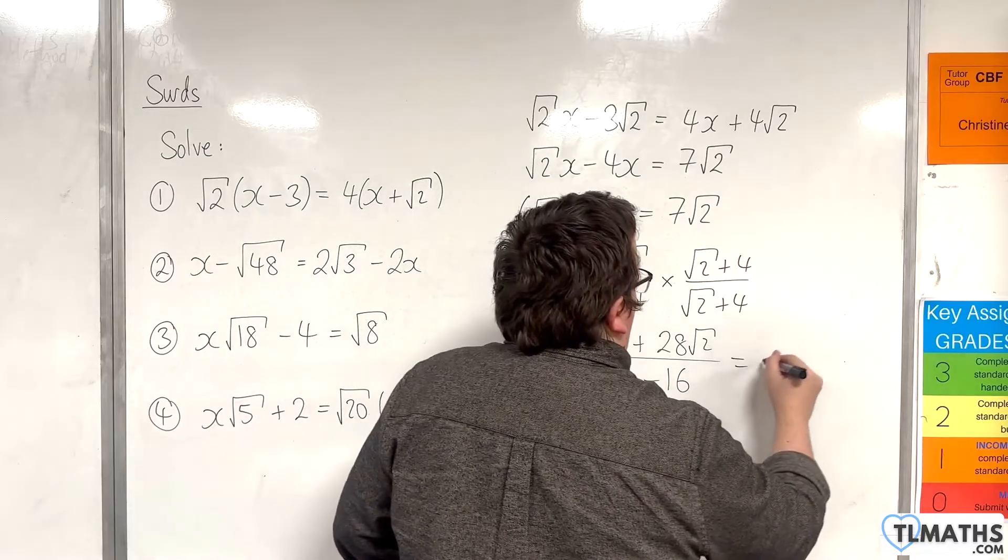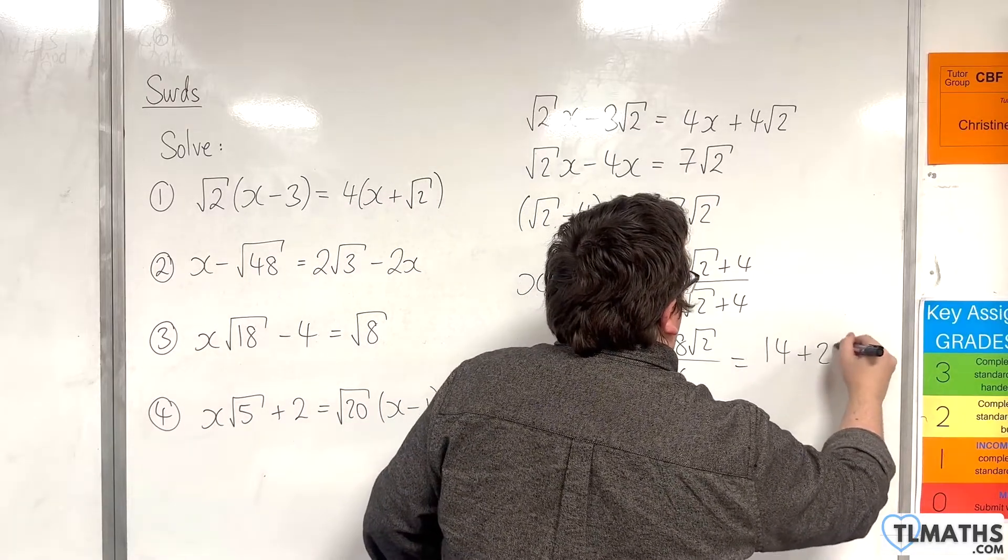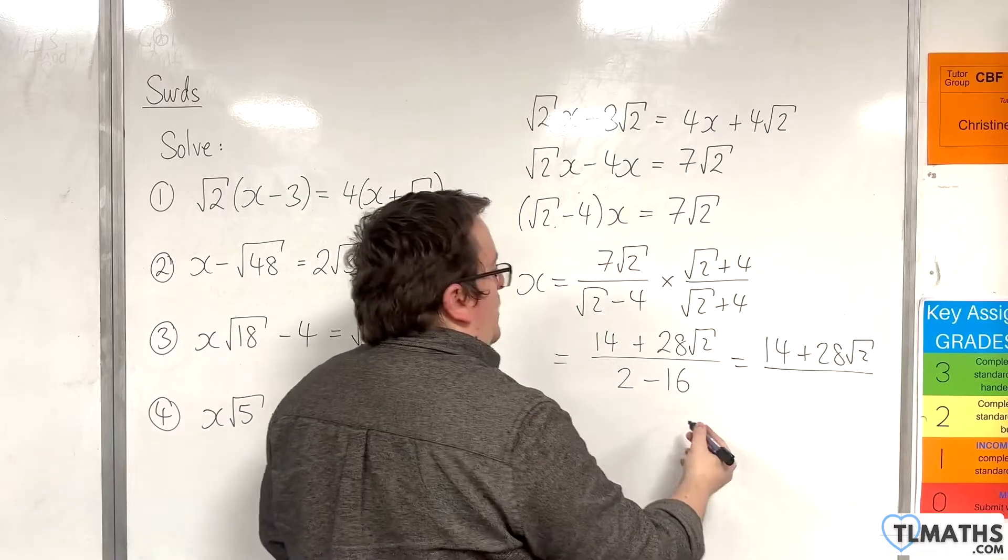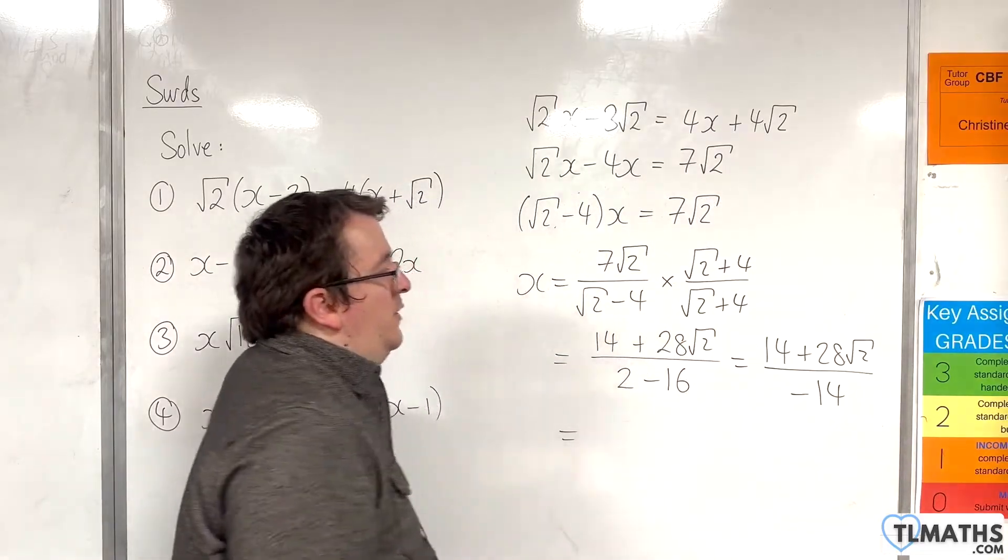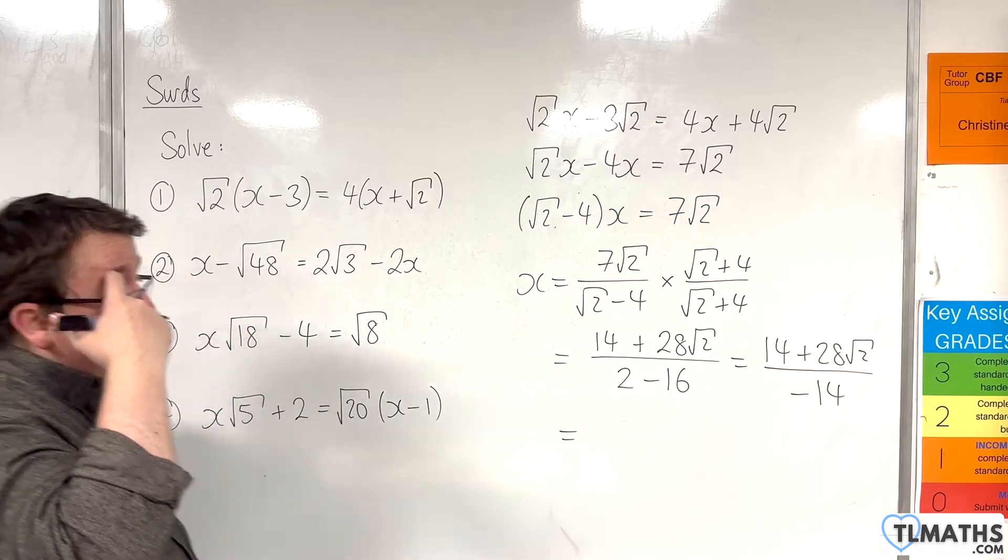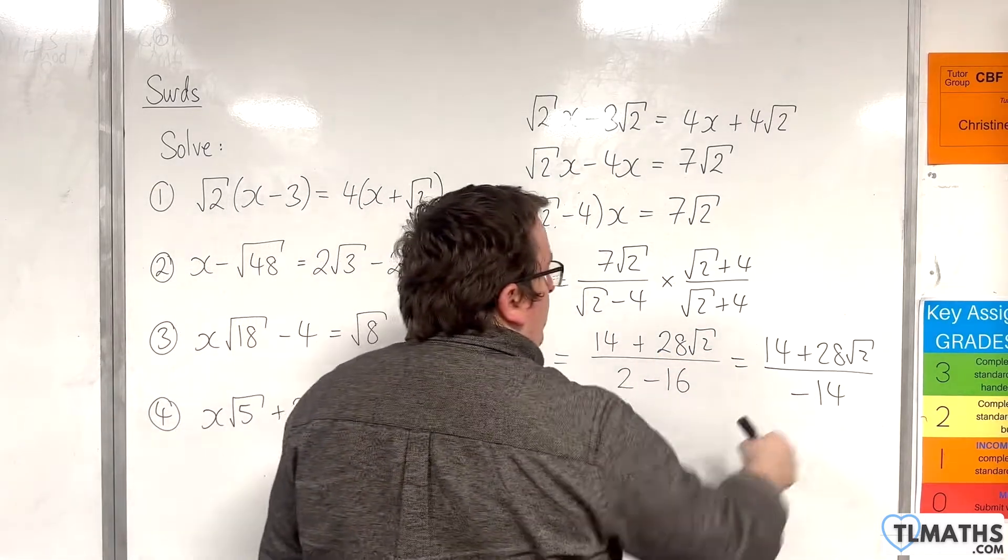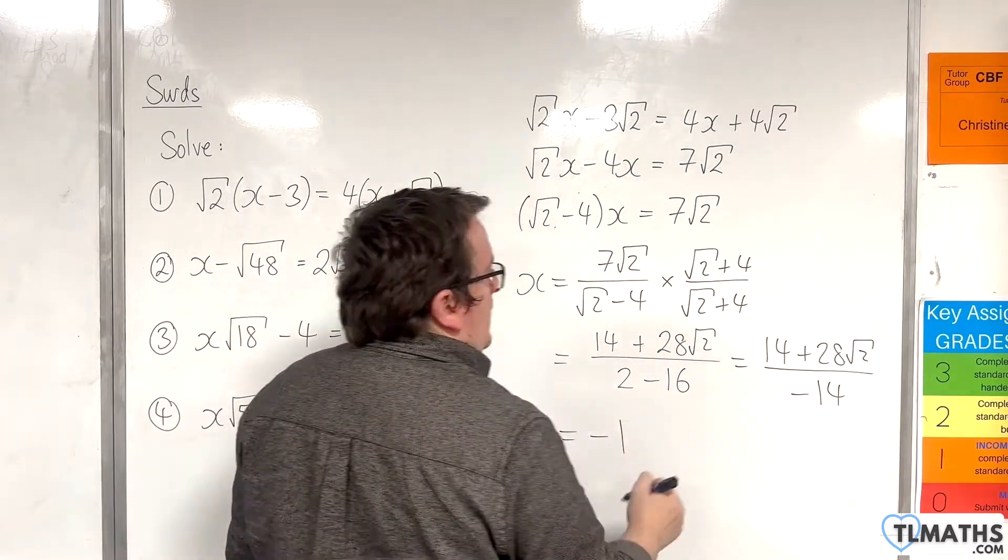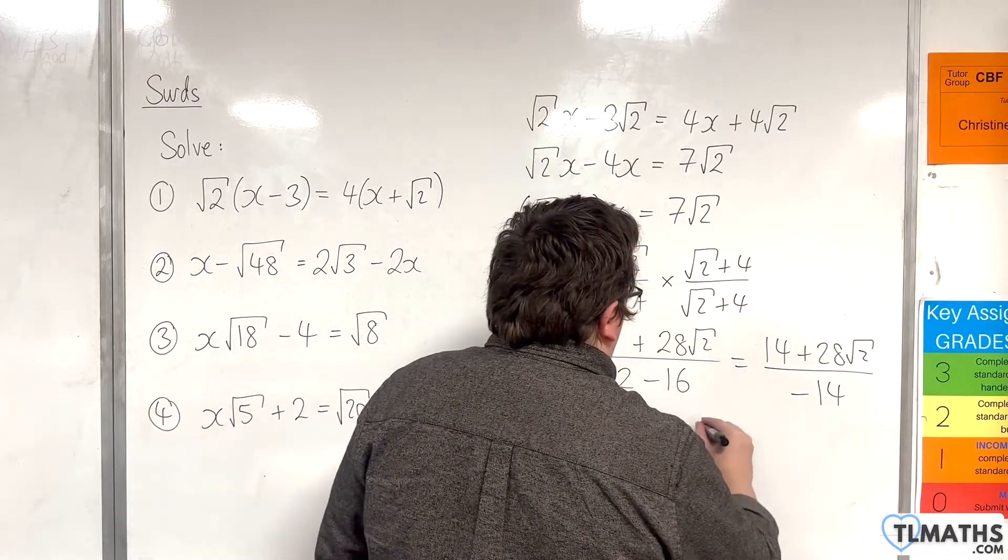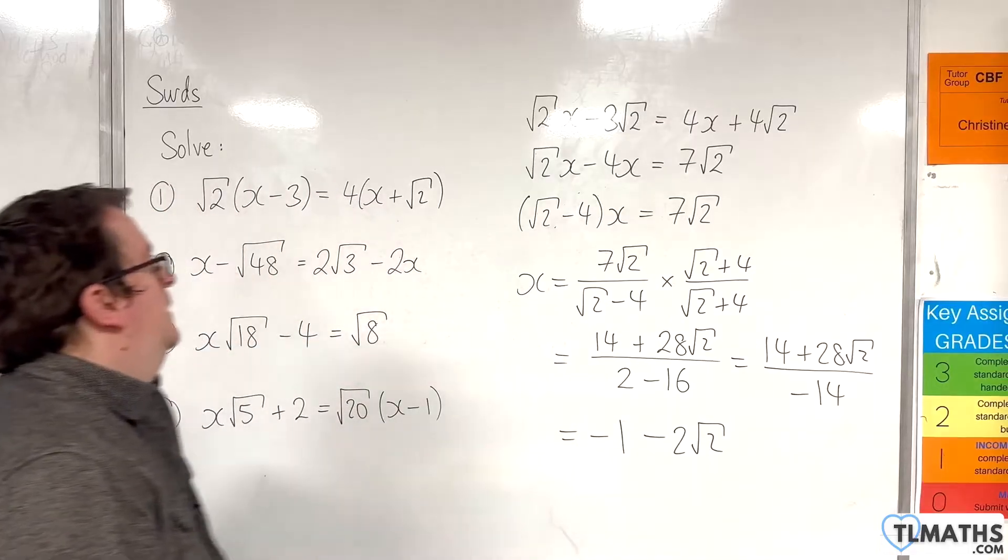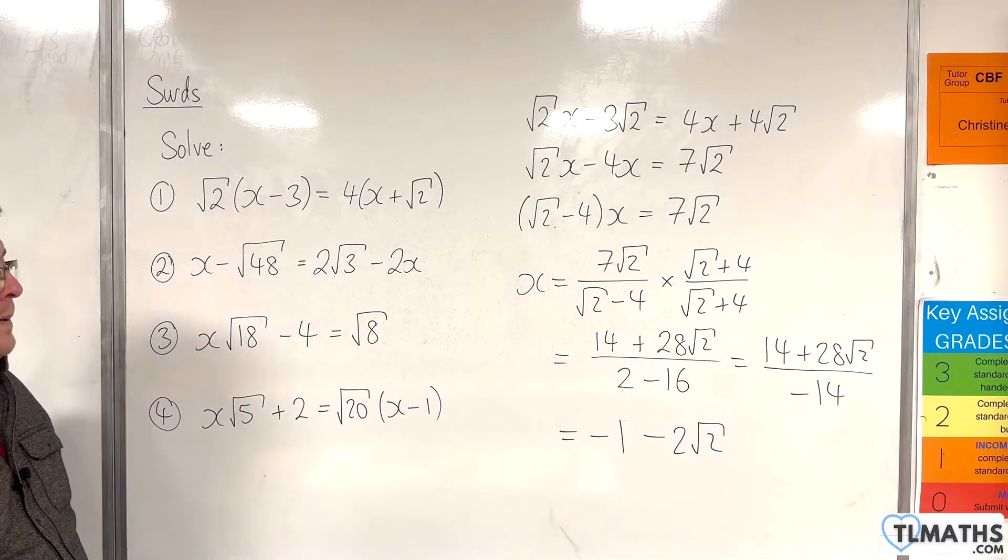So we can write that as 14 plus 28 root 2 over minus 14. Now we can divide through by the minus 14 as well. So 14 divided by minus 14 is minus 1, and 28 divided by minus 14 is minus 2. So minus 2 root 2. And so that should be my answer for the first one.